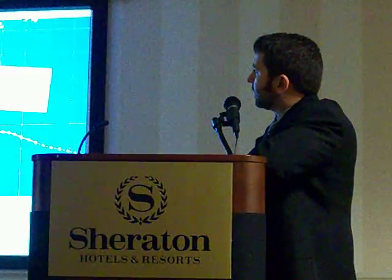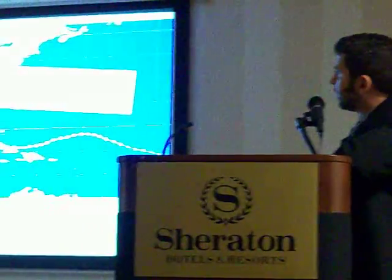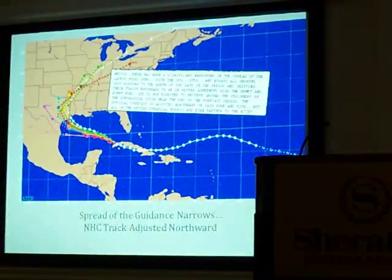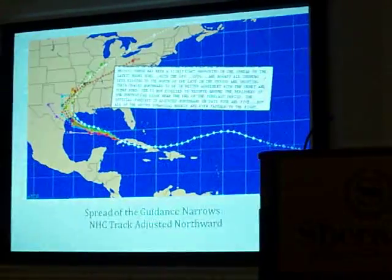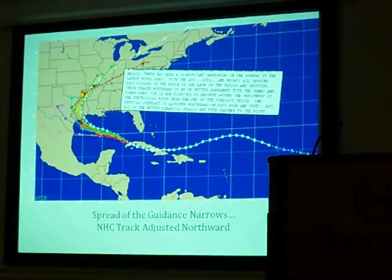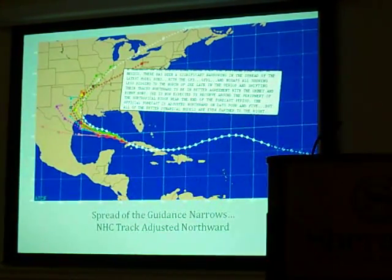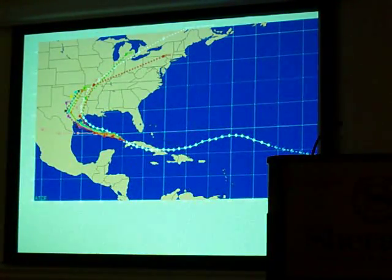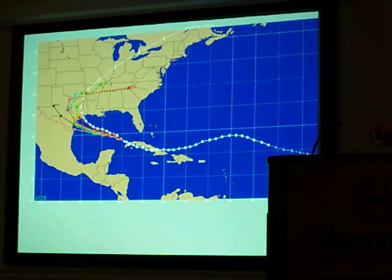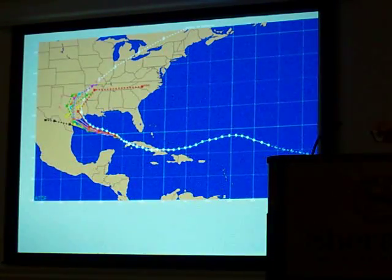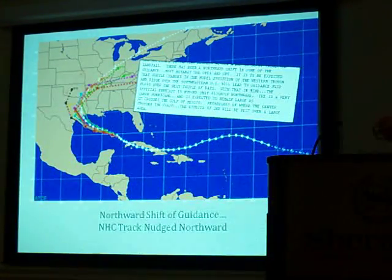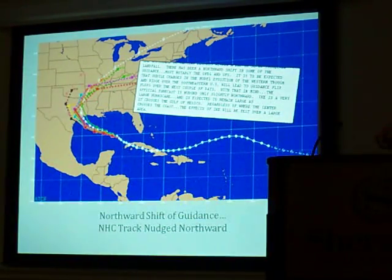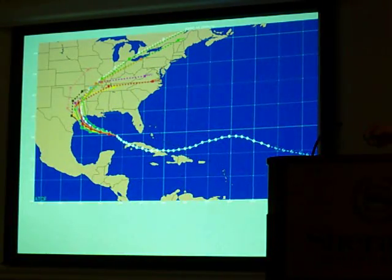It was during the next cycle that the spread of the guidance models really narrows, and the track is adjusted northward because of this. Very few models are insisting on a straight westward track into southern Texas as they were previously. For the next few cycles, the model guidance generally says the same thing and begins to converge on one particular solution along the upper Texas coast. So the track is continually nudged northward from cycle to cycle until the storm makes landfall.